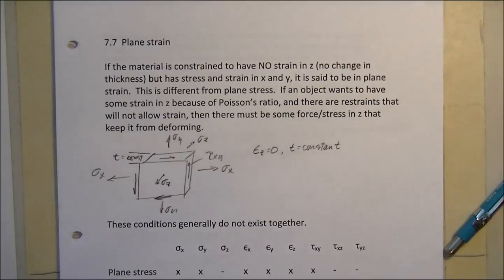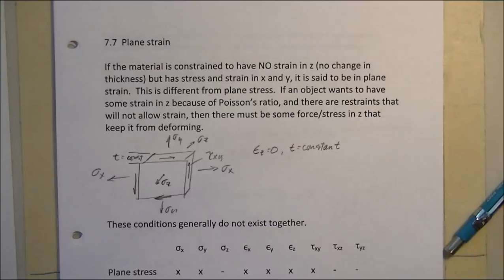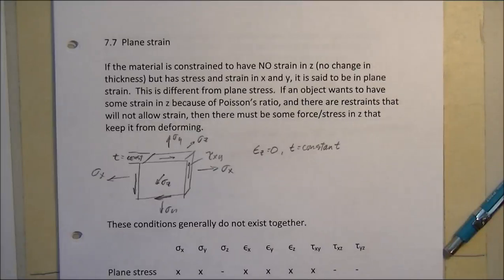Plane strain, on the other hand, is kind of the opposite. In this case there is something restricting the movement in the z direction — either it's glued to two pieces to keep it from moving, or some other force that's preventing movement in the z direction as you're stressing it in x and y. In that case, your strain is zero but the stresses are not zero, so in that way it's a little bit the opposite.